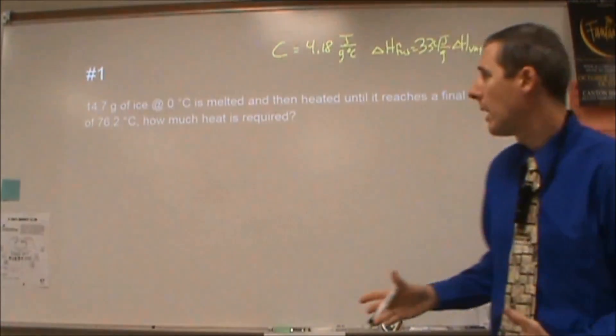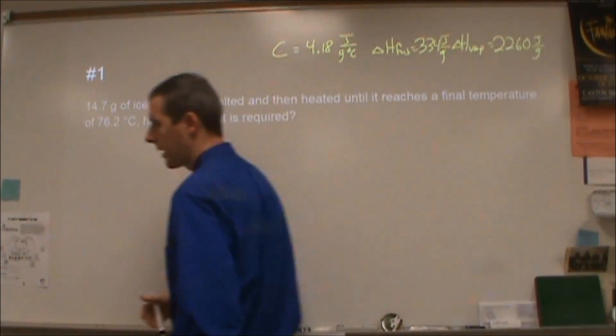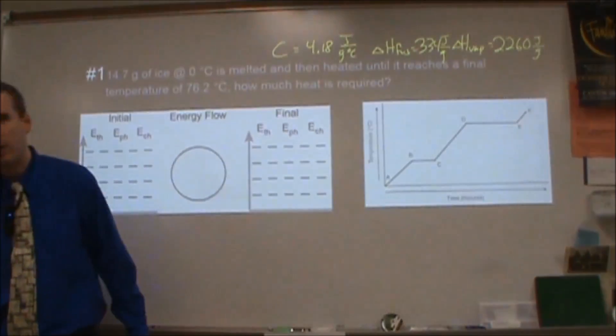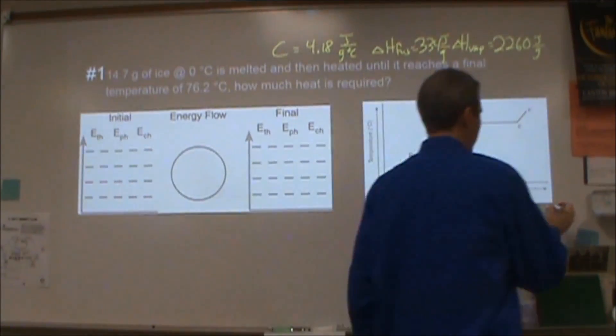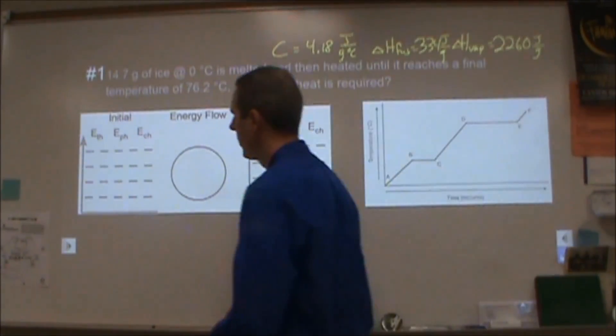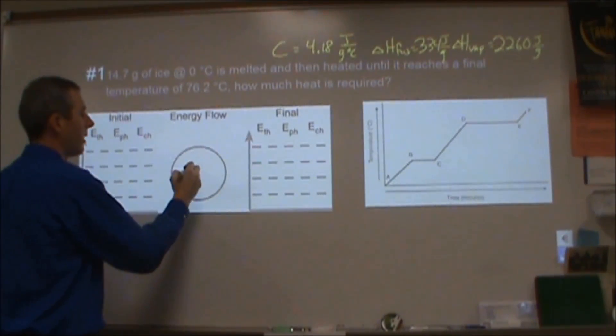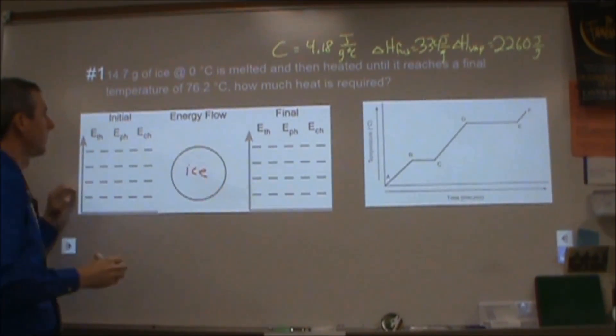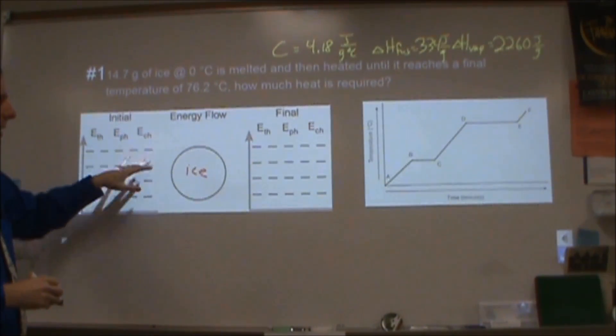Our first question here: we have 14.7 grams of ice, we melt it, and then we heat it up until it reaches the final temperature. How much heat is required? I'm going to take that question and break that down into an LOL diagram. If you've never done an LOL diagram, I have another video posted that will show you how to do them. But essentially it organizes the energy of the system into thermal, phase, and chemical.